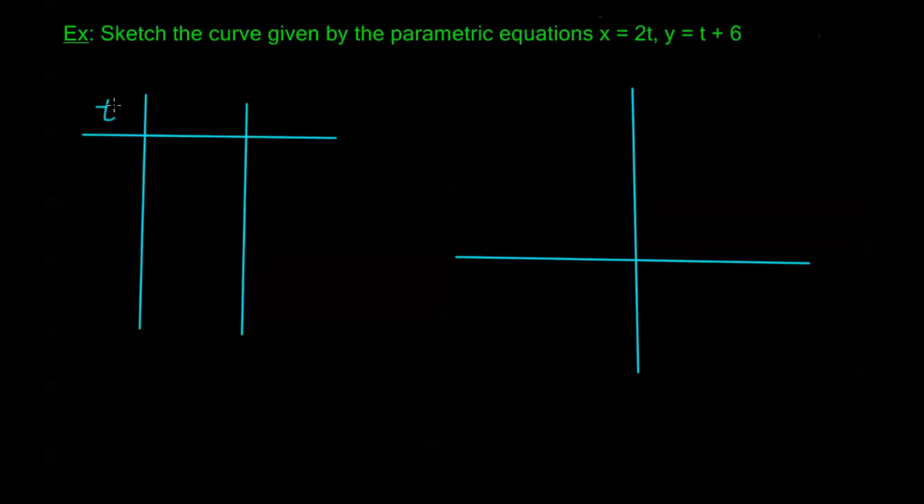And some convenient t's to use are - we want to keep simple t's - so I usually use negative 2, negative 1, 0, 1, and 2. And I want to know what x is. Here my x is equal to 2t, and I want to know what y is, which here is equal to t plus 6, for each of these values of t. This is going to give us some idea of what this plane curve looks like.